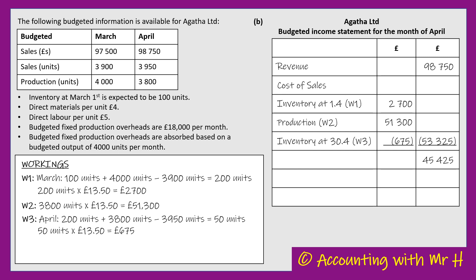The final thing I need to consider is over absorption or under absorption. It all goes back to the £18,000 of fixed production overheads per month. This business has absorbed these based on a budgeted output of 4,000 units per month, giving £4.50 per unit. But that assumes we make exactly 4,000 units. If the business doesn't make 4,000 units, they either haven't absorbed enough — called under absorption — or they've absorbed more than needed, called over absorption, if production is above 4,000 units.